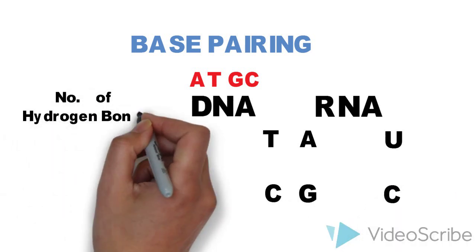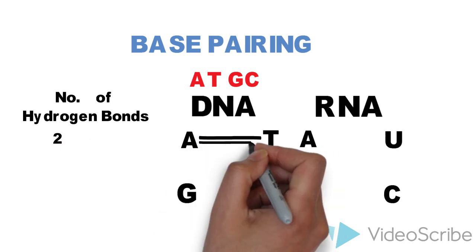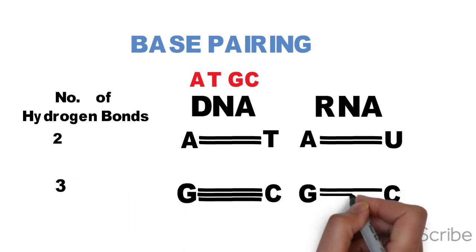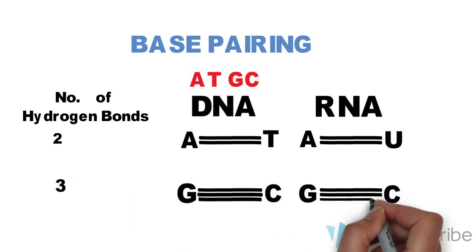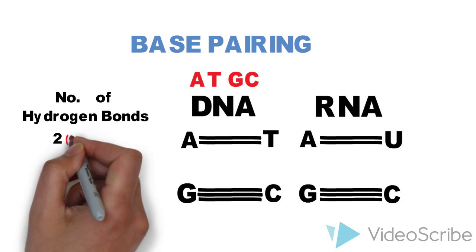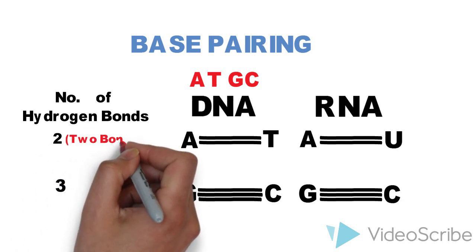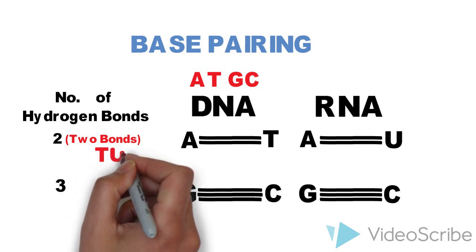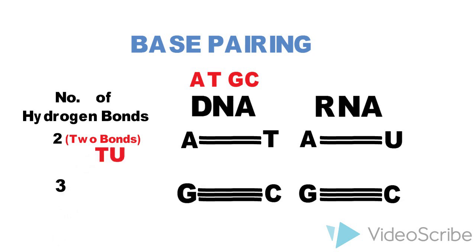You also need to remember that AT and AU have two hydrogen bonds, whereas the G and C bond has three hydrogen bonds. We have a mnemonic for this as well: 'two bonds,' which implies thymine in DNA and uracil in RNA pairs with adenine with two hydrogen bonds. Thank you.